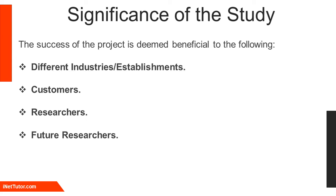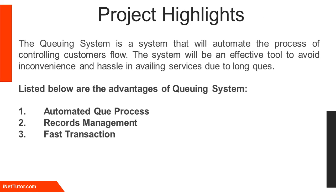Future researchers: the study can serve as their reference if they wish to make an update to the system or develop their own version of the project. The queuing system is a system that will automate the process of controlling customers' flow and will be an effective tool to avoid inconvenience and hassle in availing services due to long queues.